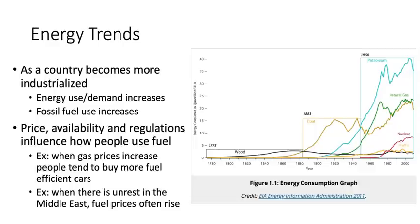Over time we see an increase in petroleum, still one of the most used fuel sources worldwide. Natural gas picks up after the 1950s, and coal declines somewhat with a jump in petroleum. After World War II, nuclear power increases as that technology was developed. Hydropower tends to stay low since not everywhere has a river suitable for a dam. Wood stays low as well, since countries are fully industrialized and use electric power instead.